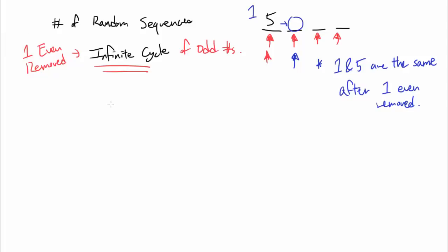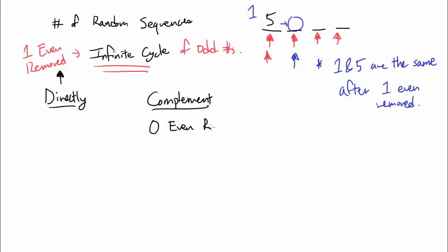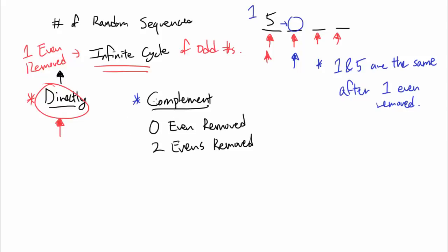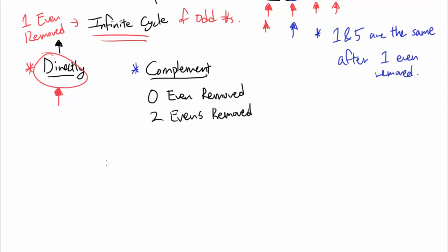Now let's actually do the case work. There are two ways of doing it: you can do the case work directly, finding all the sequences in which one even number is taken out, or you can do it using the complement — counting the sequences where zero evens are removed or two evens are removed, and take this away from the total. In my opinion, counting directly is just as easy if not easier than counting the complement. But I encourage you to try counting by complement after watching this video.